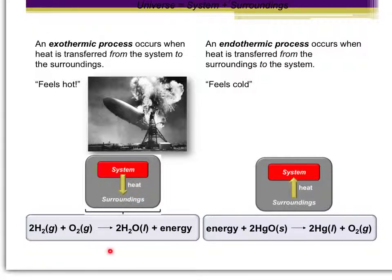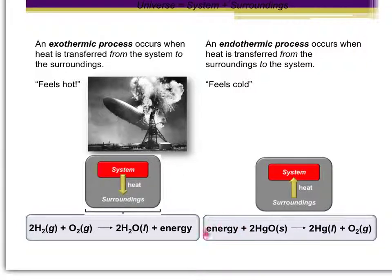When we look at a chemical equation, the liberation of energy means that energy would be on the product side — energy is given off. On the other hand, if we have an endothermic process, touching the reaction vessel would feel cold, and heat will be coming from the surroundings into the system. For an endothermic process, energy is on the reactant side because there has to be an input of energy for the reaction to occur.